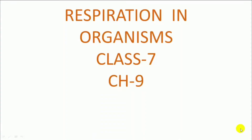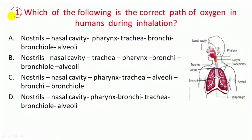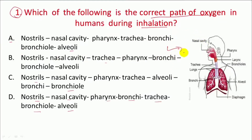Hello guys, welcome to Study with Fascination. This is NSO Olympiad Class 7, Chapter 9: Respiration in Organisms. Question 1: Which of the following is the correct path of oxygen in humans during inhalation? Jab aap saas leete ho to oxygen aap ki kahan kahan se guzarti hai? Jaise ki is figure mein aap dekh saktay ho, first of all oxygen aati hai nostril se.